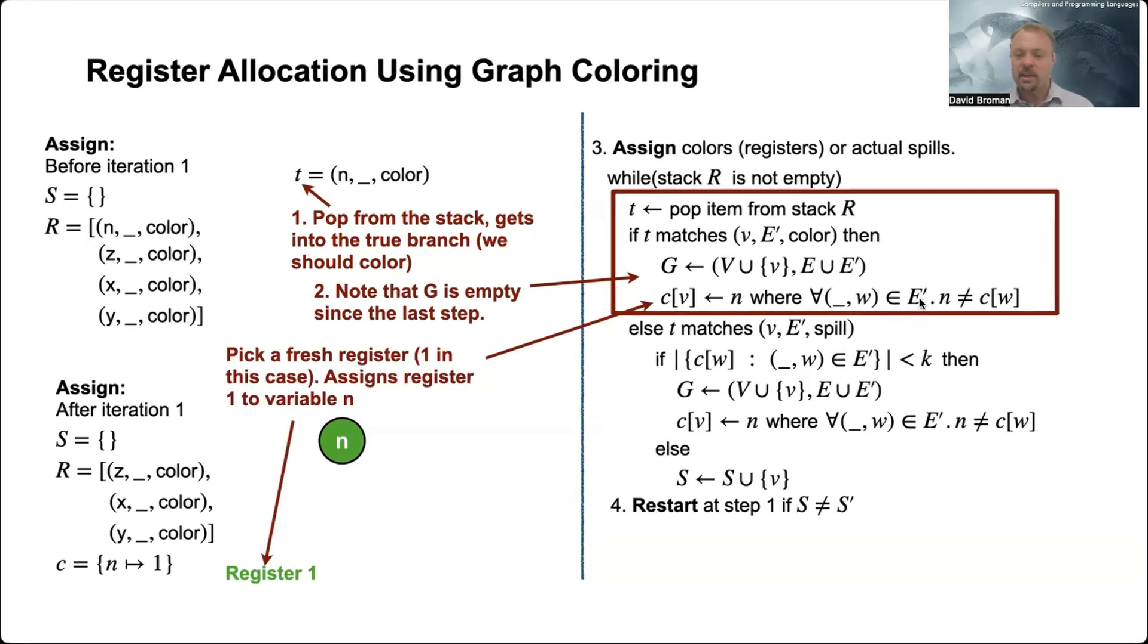For all edges in E1, then we should find a new color n that does not exist in any of the neighbors. We should pick a color where there are no neighbors with the same color. And since there are no neighbors in this case, we can pick any color. That's why we picked one. But it would be more complicated, of course, when we have more nodes.